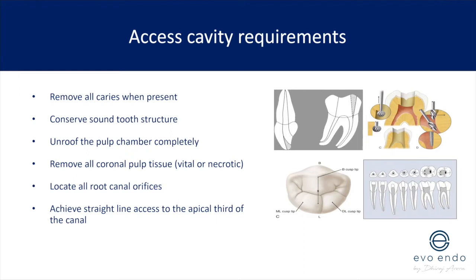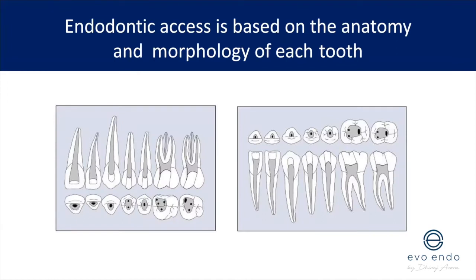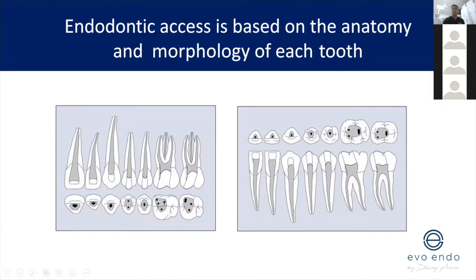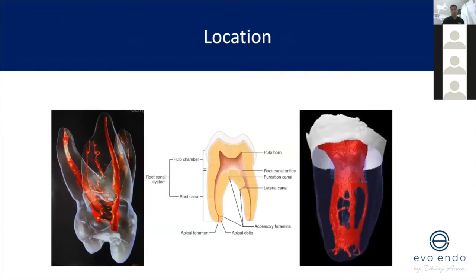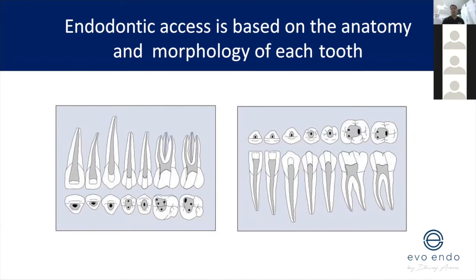This is how I was taught endo — draw a triangle for front teeth, rhomboids for back teeth, circles for the ones in the middle. But we know that it shouldn't be us that guides our access cavity; it should be the tooth itself, its shape, and where you predict the pulp chamber to be. So although I was taught this, I no longer would just say draw a circle or an oval — I'll try and teach you something a little bit more sophisticated that's still easy to understand.